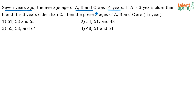If you go by the concept of equal distribution, if 7 years ago the average was 51, we can say A is 51, B is 51, C is 51 — equal distribution. So all three were 51 years, 7 years ago. Presently, each of A, B and C will increase by 7 years. If each value increases by 7, the average also increases by 7. That's a classical law.